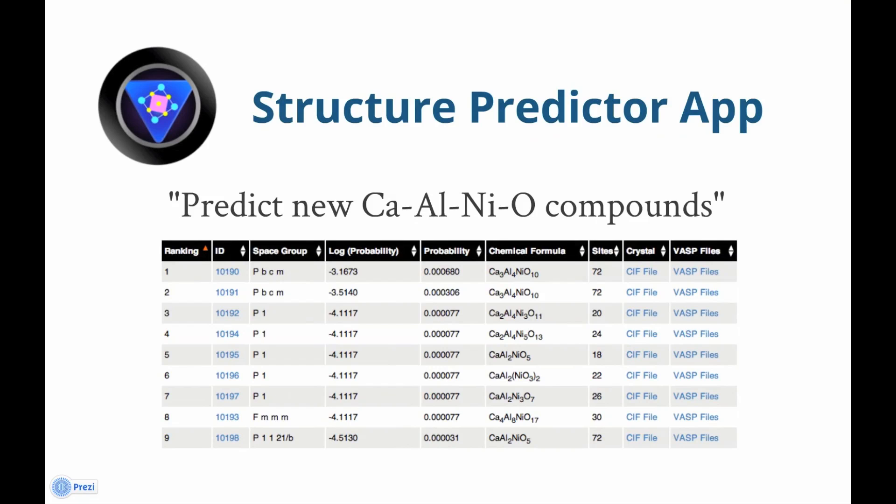To use the Structure Predictor app, you specify a chemical space that you're interested in, such as calcium, aluminum, nickel, oxide. We'll cover how to use the interface in a different video.